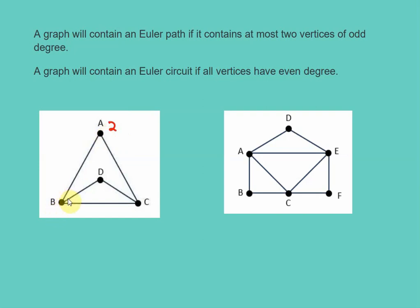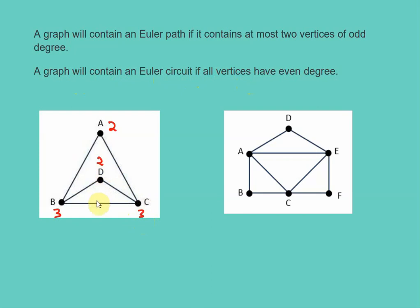Vertex B has three edges connected to it, so its degree is three. Vertex C also has three edges, and vertex D has two. Based on the theorems, a graph will contain an Euler path if it contains at most two vertices of odd degree. Here, vertices B and C have odd degrees, but that's only two — so this would have an Euler path. However, since not all vertices have an even degree, this would not have an Euler circuit. It would have an Euler path only.